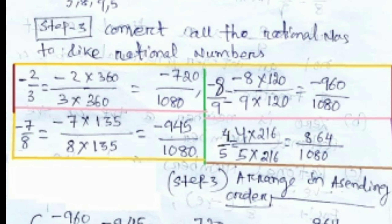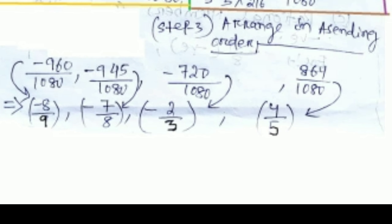Similarly, minus 8 by 9 — we multiply 120 up and down — and we get minus 960 by 1080. Then minus 7 by 8 is converted to minus 945 by 1080, and 4 by 5 is converted to 864 by 1080. Now we arrange all the numbers in ascending order.